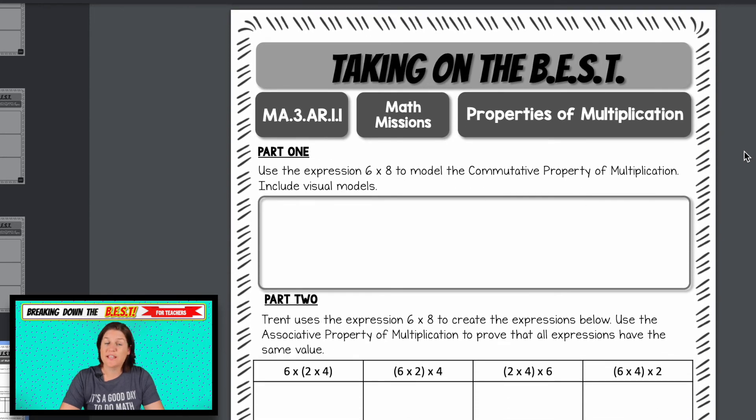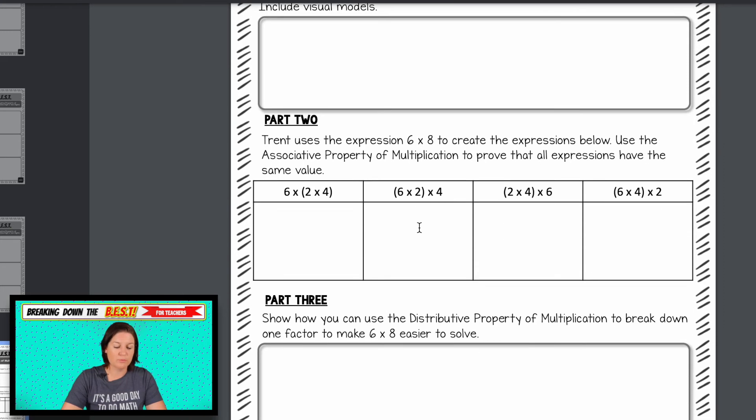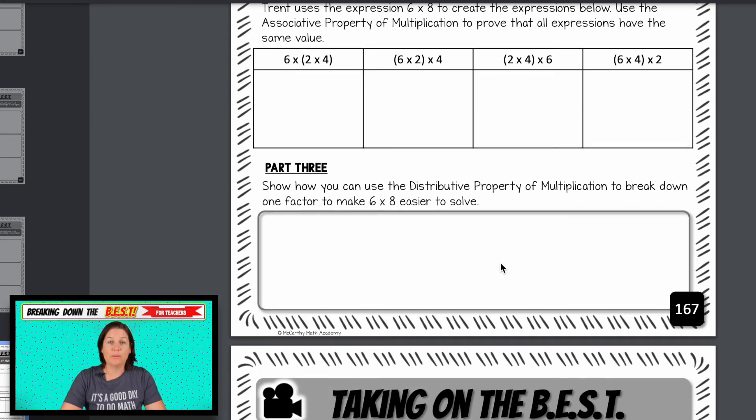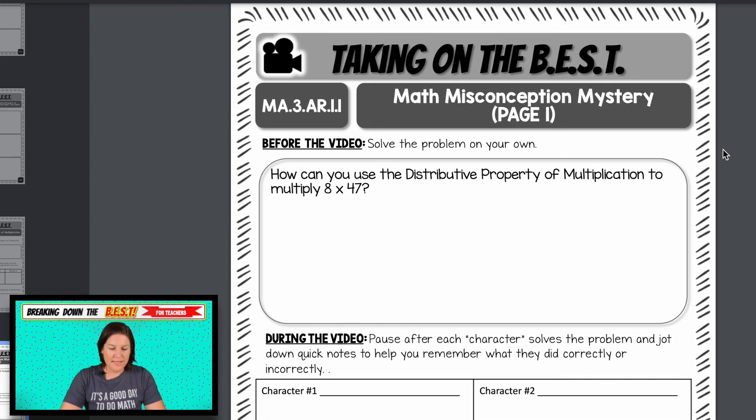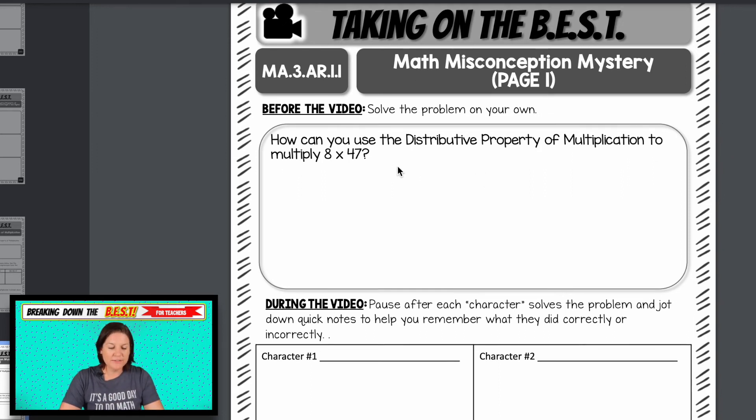All right. And then you have the math mission, which is like a math, it's a math task. It's not like a math task. It is a math task. It's usually a multi part problem where in the video lessons on the bronze section, we isolate the skills for the math tasks. We're putting them all back together again. So this one says to use the commutative property of multiplication. And we have the associated property of multiplication and then the distributive property of multiplication. So throwing everything back together again.